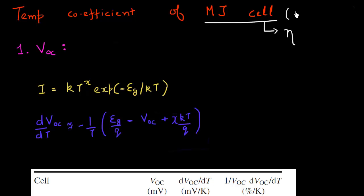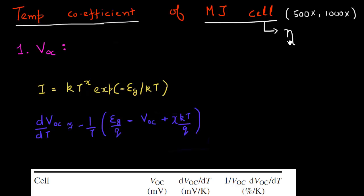Another thing is that these multi-junction cells work best when you operate them at high concentration — at a concentration of 500x, 1000x, or even higher. These are often placed in regions which have very high direct incidence sunlight, usually in regions which have higher temperature profiles, such as deserts.